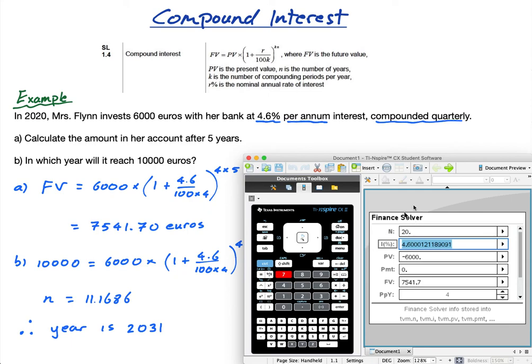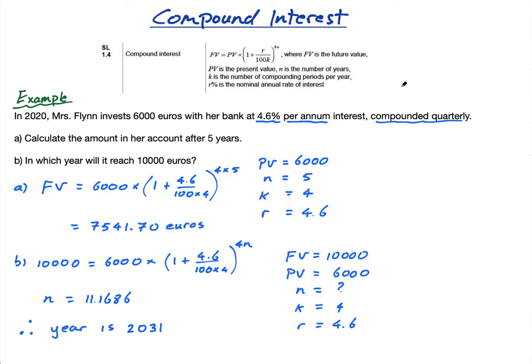So Finance Solver is really, really useful. It makes complicated questions really easy. Those of you studying applications, we're absolutely 100% going to use it for loans and annuities, and it's going to be really useful for that. But for compound interest, what I recommend is you use the formula and then use Finance Solver just to check your answer or to do it twice to make sure you're correct.